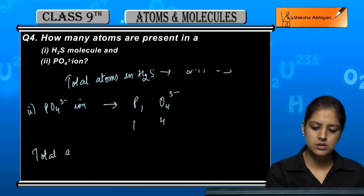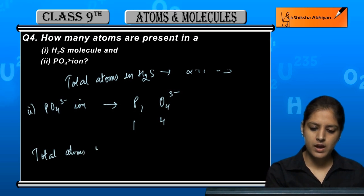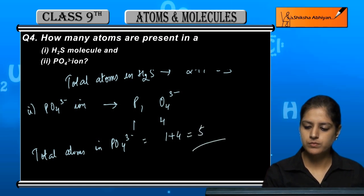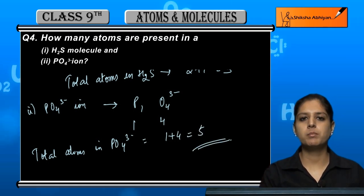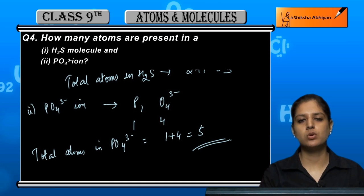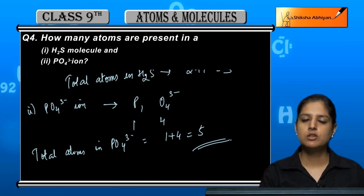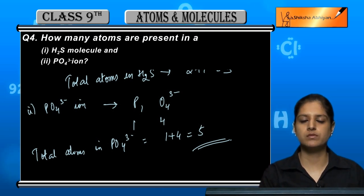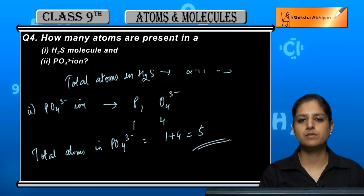So total atoms in PO4 three minus is 1 plus 4 which equals 5. To find the total atoms in a compound or an ion, we add up all the atoms in that compound or ion.